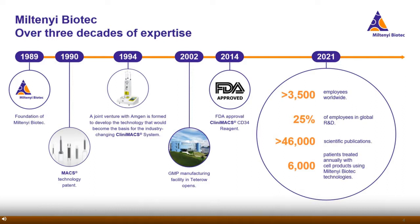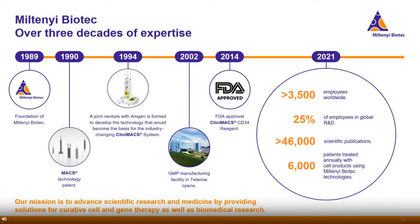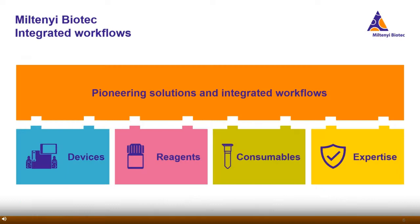The owner of our company developed the MACS technology — a column-based magnetic cell isolation technique — already in 1990. Already 25 years ago, we started to develop our clinical portfolio. By now, about 6,000 patients are treated each year with cells isolated with our trusted and well-established MACS technology. What started as a one man's diploma thesis has grown into a global company of more than 3,500 employees worldwide, with almost a quarter of all employees working in R&D, engineering, and clinical development. We have over 46,000 scientific publications citing our MACS technology. We all work together to advance scientific research and medicine by providing solutions for curative cell and gene therapy as well as biomedical research.